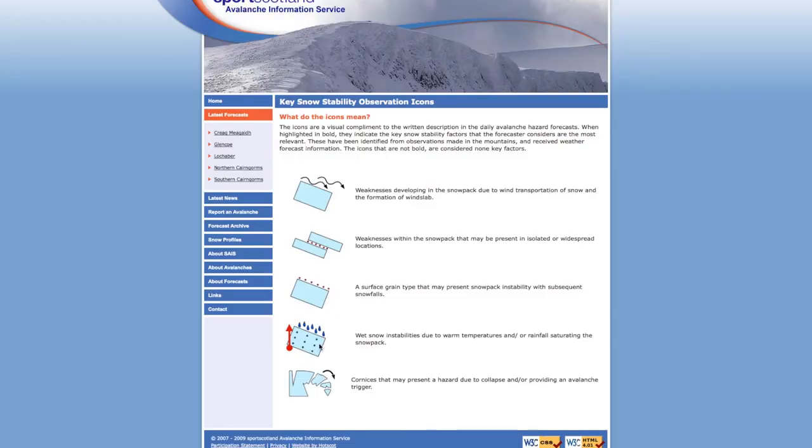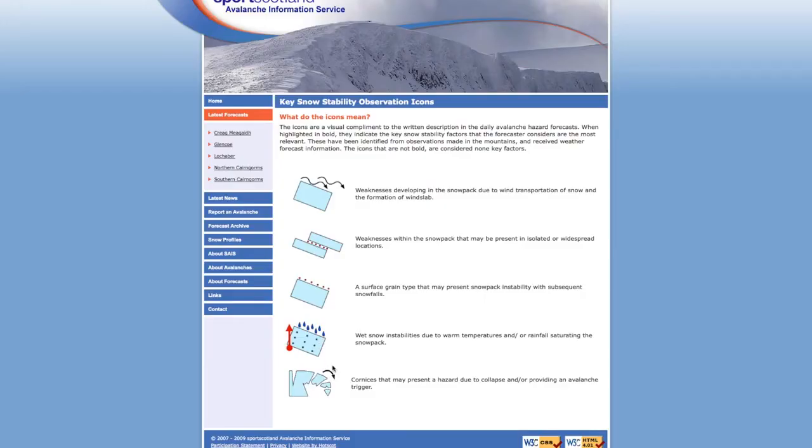The next one down here is wet snowpack, wet snow instabilities due to warm temperatures. And really the thing that we're most concerned about, or most alert to, is when we get rainfall right at summit levels, because rain at summit levels really saturates the snowpack and we will get periods of quite pronounced instability.